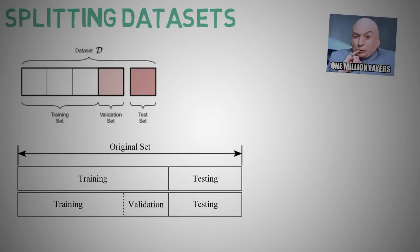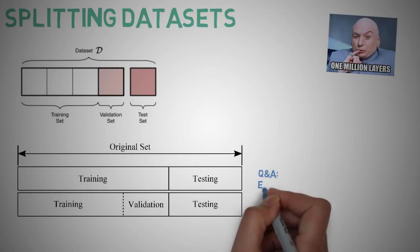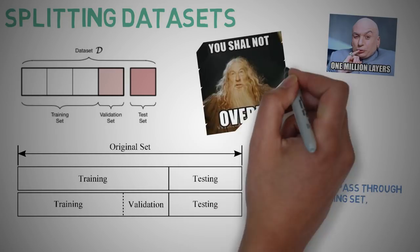And then we have the test set, a set of examples used only to assess the performance or generalization of a fully specified network or to apply successfully in predicting the output whose input is known. This is also to check that we do not overfit our data.